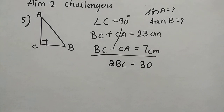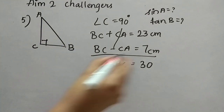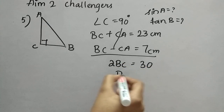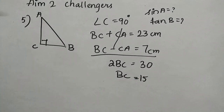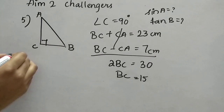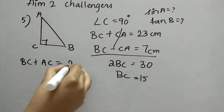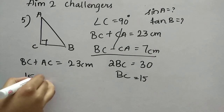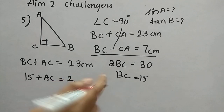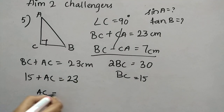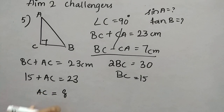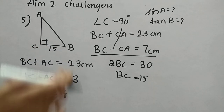Now we find BC: 2BC equals 30, so BC equals 30 divided by 2, which is 15. Now substituting BC into the first equation: BC plus AC equals 23, so 15 plus AC equals 23, giving AC equals 23 minus 15, which is 8. So BC is 15 and AC is 8.